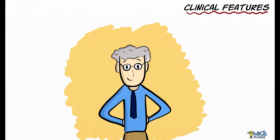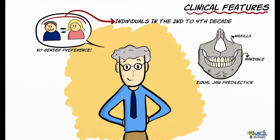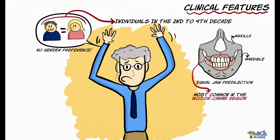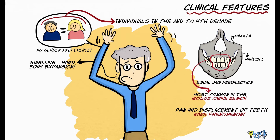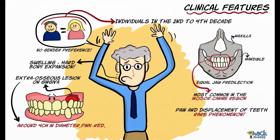Calcifying Odontogenic Cyst does not have a gender predilection and usually affects individuals in the second to fourth decades of life. The maxilla and mandible have equal predilection, but the lesion most often occurs anterior to the molars in the incisor-canine region. Clinically it presents as a swelling with hard bony expansion; individuals may rarely have pain and displacement of teeth. Extraosseous lesions occurring in the gingiva are around 4 centimeters in diameter, pink to red in color, resemble fibromas, and are smooth elevated masses in the incisor-cuspid region.